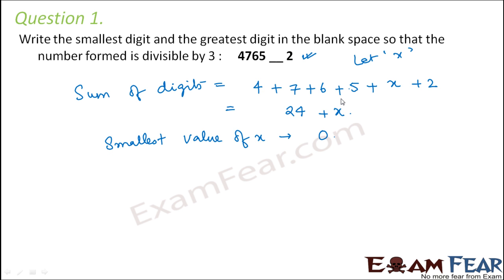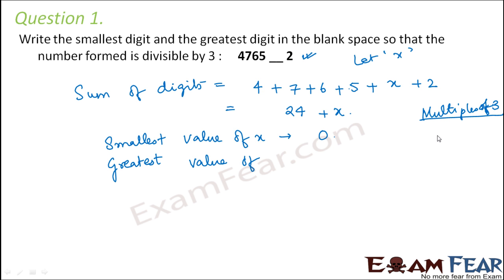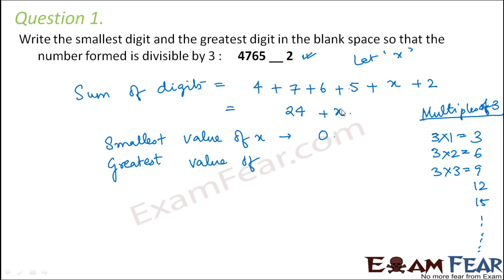What is the greatest value that x can take? x is a digit, so x can only be a single digit number. It has to be divisible by 3. Looking at the multiples of 3: 3, 6, 9, 12, 15, and so on. So the smallest value of x could be 0, the next value could be 3 — because if x is 3, the sum becomes 27, which is divisible by 3. The next value of x could be 6, and the next could be 9. So x can only take these values, because only then will the sum be divisible by 3.